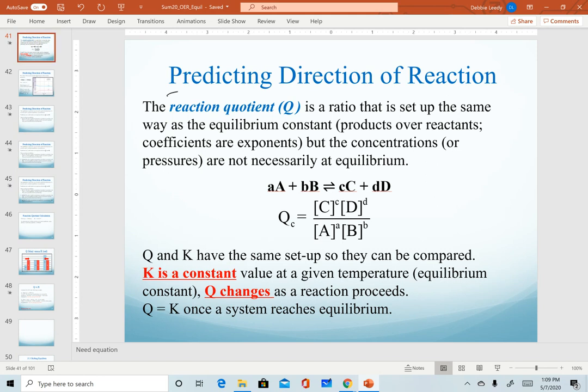In order to answer that question, we set up a quantity known as the reaction quotient. We use the letter Q for it, and we can assign Q the same subscripts as we do with K. So a C subscript indicates that we are measuring concentrations. We could also do a Q sub P if we were measuring pressures of substances.